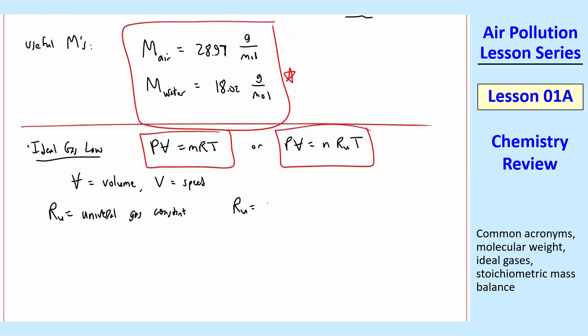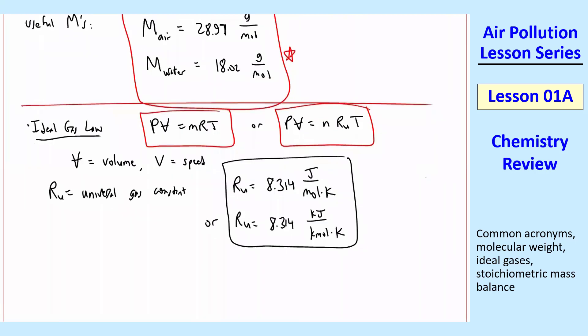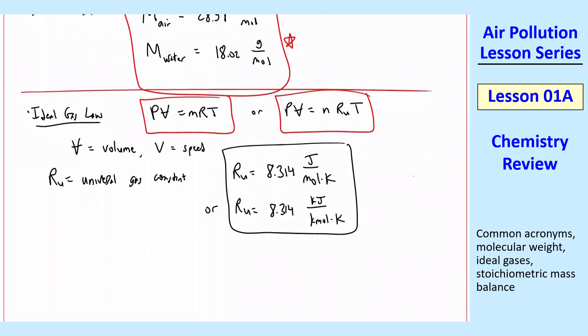So here, Ru is called the universal gas constant. And Ru is equal to 8.314 joule per mole k. And you can also write that as 8.314 kilojoule per kilomole k. So either of these is acceptable. And just use the one that is easiest to use in whatever equation you're using.